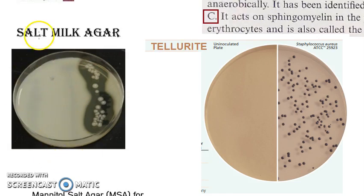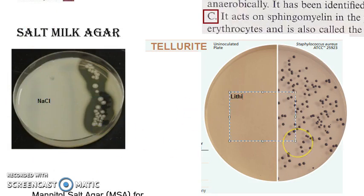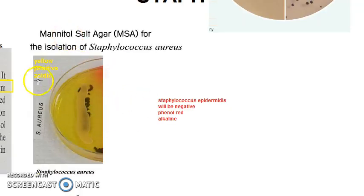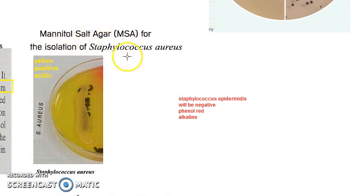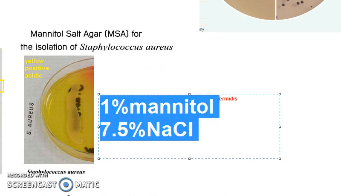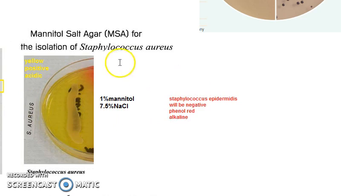One more you should know is Mannitol Salt Agar. Mannitol Salt Agar has 1% mannitol and 7.5% salt. This media is used for isolation of Staphylococcus aureus — it will form yellow color, which is positive and acidic.